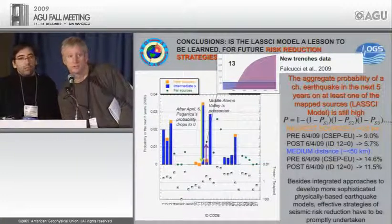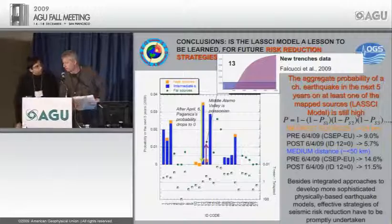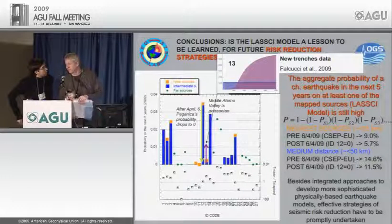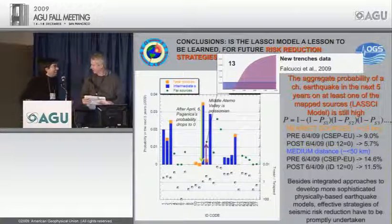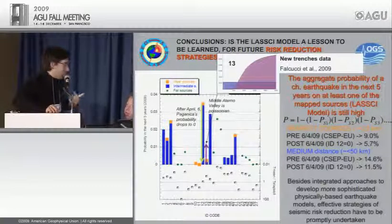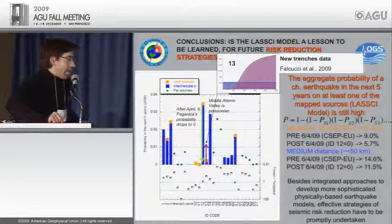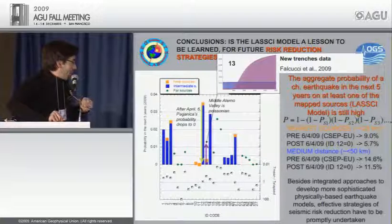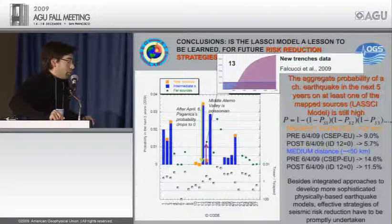Time for questions. One question about uncertainties in segment boundaries: it is difficult because we need to work extensively with slip distribution and displacement distribution along the fault strike. The Paganica lineament is one of the worst-studied; the general lineament is the best. We hope to collect more data to better segment these faults.